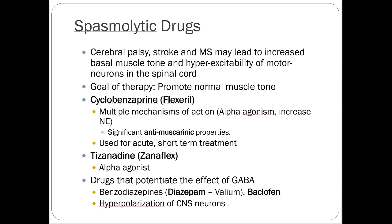Spasmolytic drugs have multiple mechanisms of action. Cyclobenzaprine or Flexeril is a really common one — it has some alpha activity, increases norepinephrine presence in the CNS, and has significant anti-muscarinic properties. It's useful for acute muscle spasms; if somebody has back spasm, it might be tried. We'll go into substantial detail on these when we talk about pain.